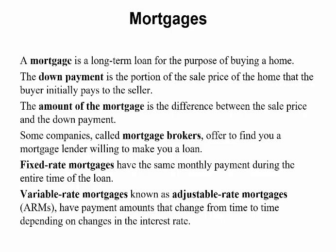Fixed rate mortgages have the same monthly payment during a certain time of the loan. For example, when I bought my house, I have a fixed mortgage rate. In variable rate mortgages, also known as adjustable rate mortgages or ARMs, payment amounts change from time to time depending on changes in the interest rate.